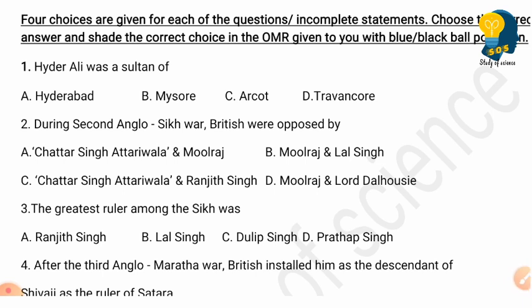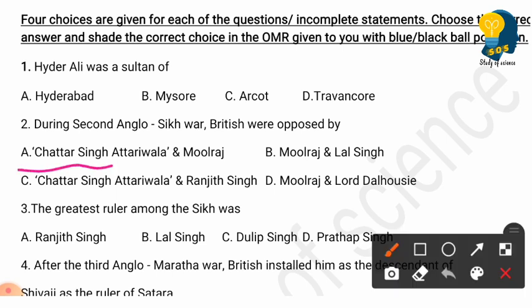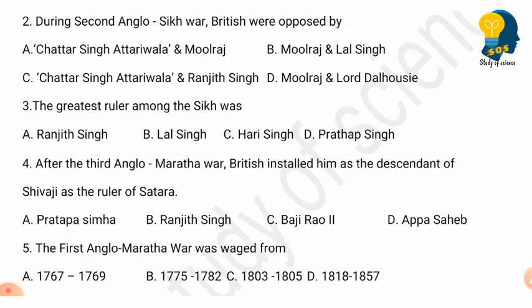Question 2: During the Second Anglo-Sikh War, the British were opposed by — options: (A) Chattar Singh Attariwala and Mulraj, (B) Mulraj and Lal Singh, (C) Chattar Singh Attariwala and Ranjit Singh, (D) Mulraj and Lord Dalhousie. The correct answer is option A: Chattar Singh Attariwala and Mulraj.